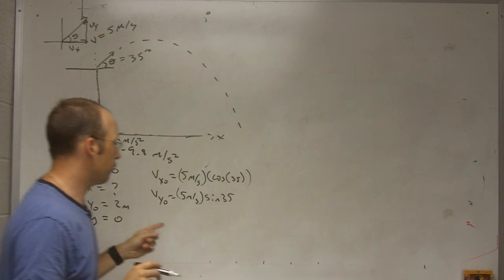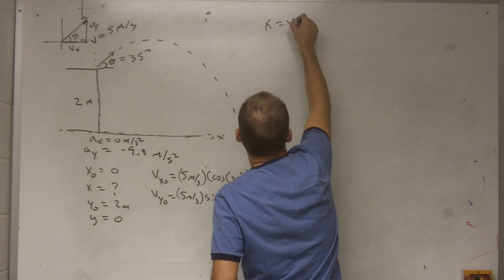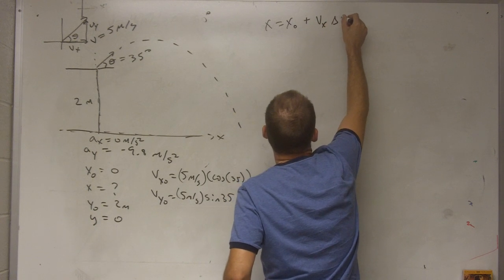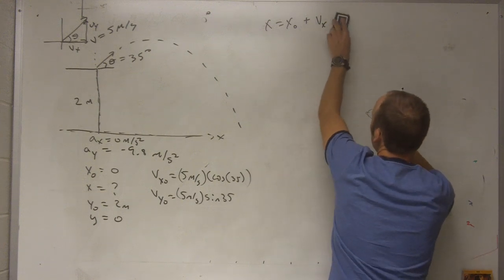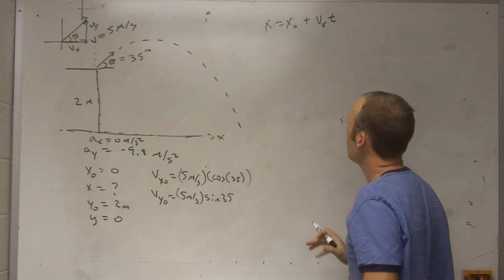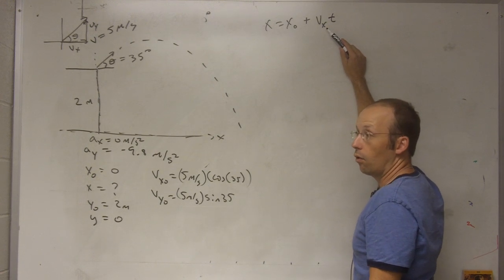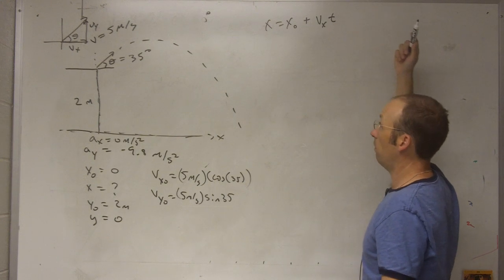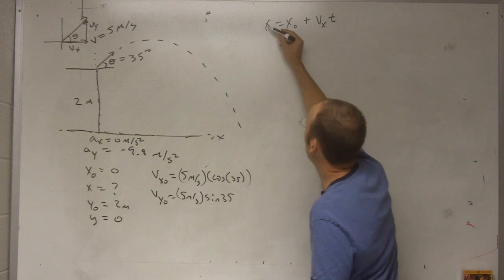So in the x direction with no acceleration, I can say x final equals x initial plus vx. If I start at time t equals zero, which I will, just to be lazy, I'll just say t. I don't have to say vx0 or vx. The x velocity never changes. So I can just call it vx. It's just one value. But that's one thing I know.